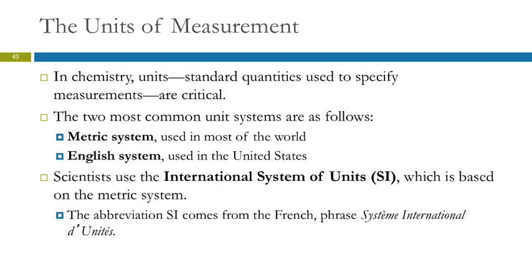There are two common unit systems: the metric system and the English system. The English system uses things like feet, inches, and degrees Fahrenheit — that's what we commonly use in the United States. The metric system is based on powers of 10. What scientists use is technically the International System of Units, or the SI system. It's based on the metric system, and I'll use those terms interchangeably.